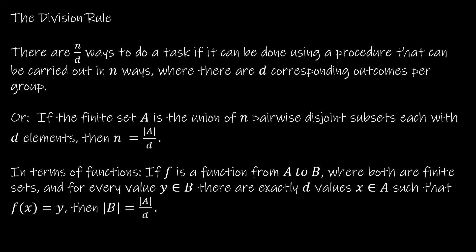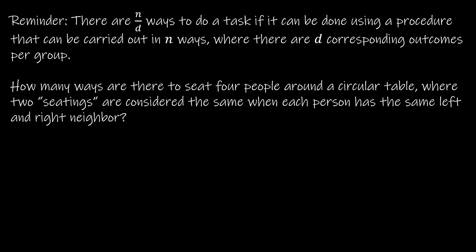We're going to speak very quickly about the division rule, but it's kind of silly because we actually are going to talk about it in more detail later. But let's just do it because it's in your textbook and I want to make sure that you have all of the tools necessary to answer any questions that I might assign you. So the division rule says there are N divided by D ways to do a task if it can be done doing a procedure that can be carried out in N ways where there are D corresponding outcomes per group. I've also listed a couple of other ways that it can be phrased, but essentially what they're saying is if there's N ways to do something, but there are D that are essentially the same in some way, then make sure you divide by D in order to have the true value.